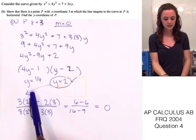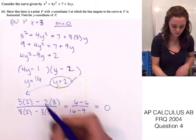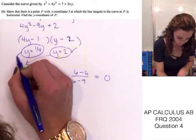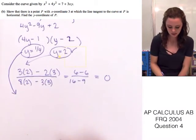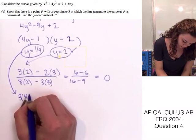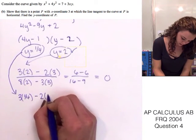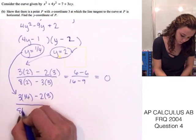And now we need to go ahead and see if when y equals 1 fourth, if we also get a slope of 0. So, let's plug this in to the derivative function to see if the slope of the tangent line is 0. So, 3 times y, which is 1 fourth, minus 2 times x, which is 3.